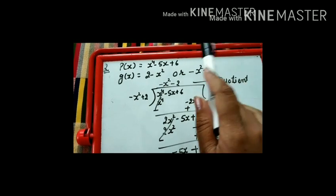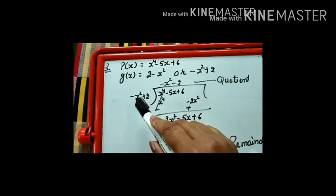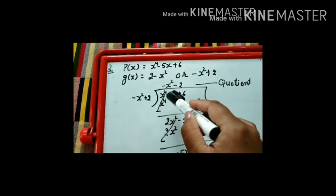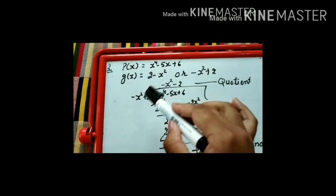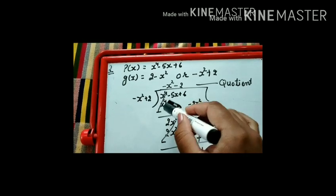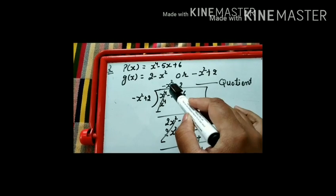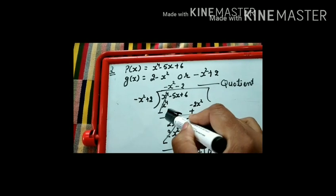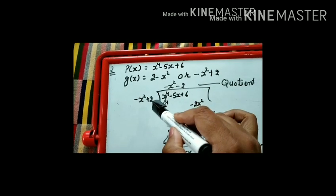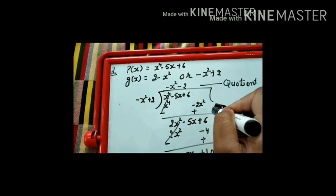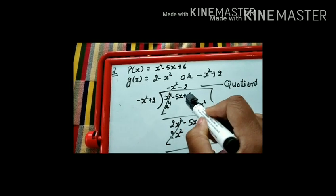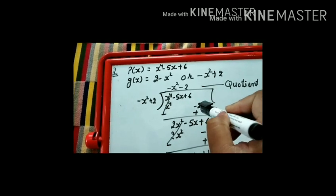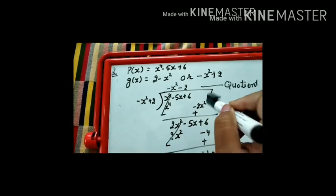P(x) is our dividend and g(x) is our divisor. Here we have -x² as the leading term, and x⁴ is the leading term of the dividend. We multiply -x² by -x² to get x⁴. Then we multiply -x² by +2 to get -2x². Note that there was no x³ term, so we kept the -2x² term separate — same-degree terms must be placed under each other.